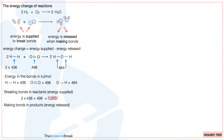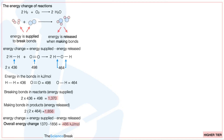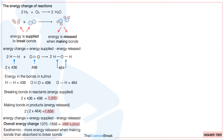Making bonds in the products: there are two O–H bonds per water molecule and two molecules of water, so that's four times 464, giving us 1856 kJ/mol. The overall energy change is energy supplied minus energy released: 1370 minus 1856 = minus 486 kJ/mol. This tells us it is an exothermic reaction, because more energy is released when making bonds than is absorbed to break bonds.